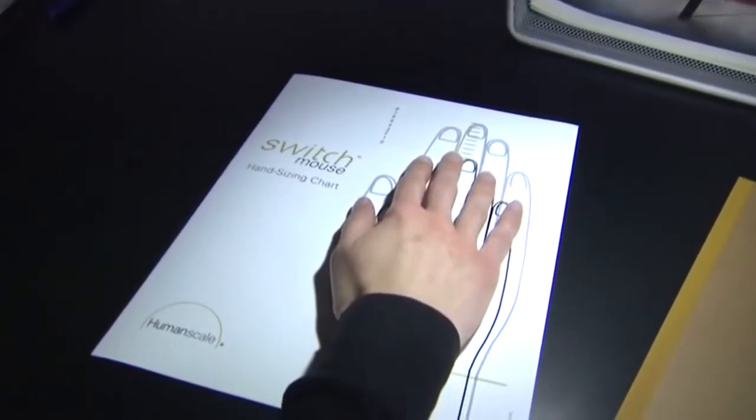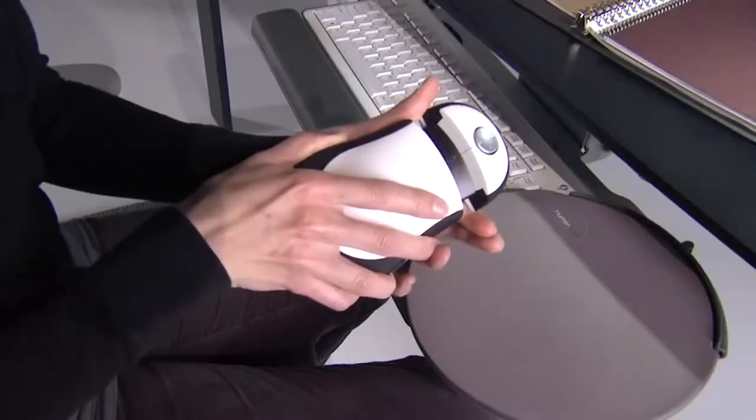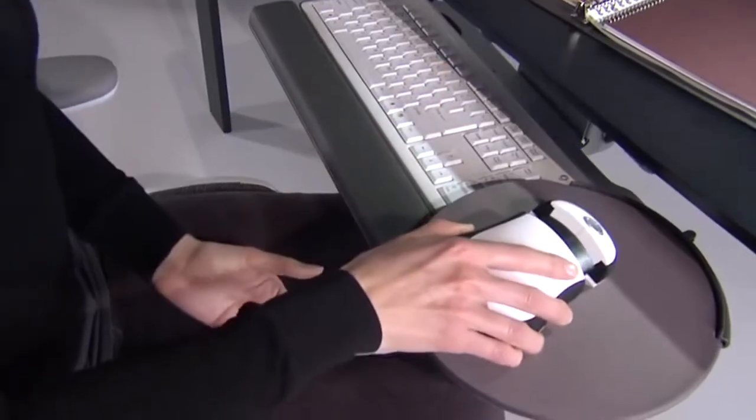We also wanted adjustability so that the mouse could fit anyone's hand properly, and it wouldn't be too small, wouldn't be too big, and the palm support would be right where it needs to be. When you buy the mouse, it comes with a hand sizing chart. You put your hand on the chart, and it tells you what number you are, and then you grab the mouse, extend it, and size it to fit your hand.